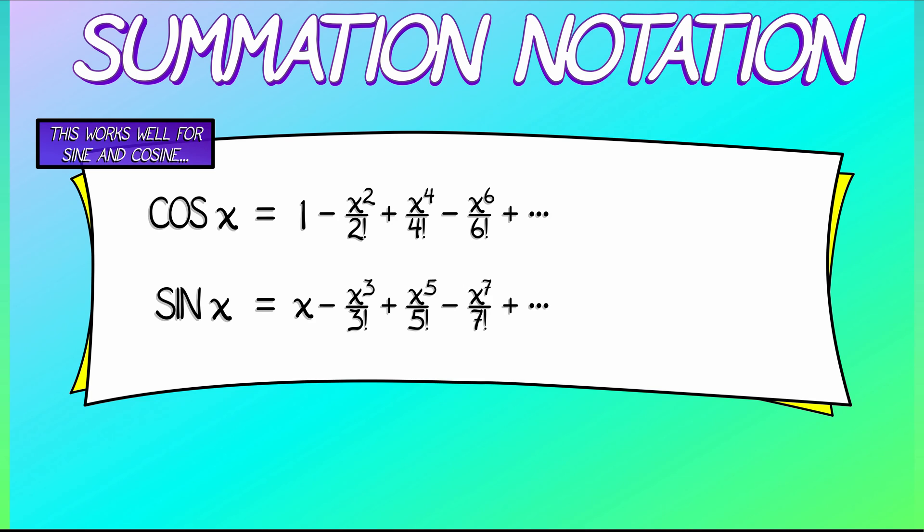The first thing to notice is that these are alternating series. Their terms vary plus, minus, plus, minus. We just saw an example of how to do that in summation notation. The second interesting feature is that we're skipping powers. We either have all the even powers with cosine or the odd powers with sine. The way we're going to encode that in summation notation is as follows.